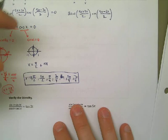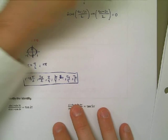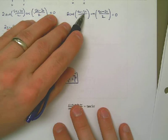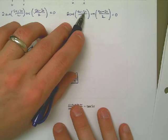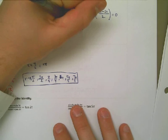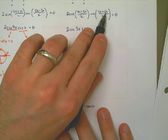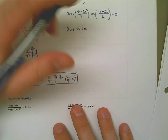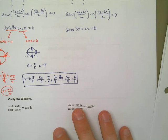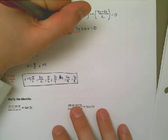That means that 2 cosine of, let's see, that's 4x plus 2x is 6x, 6x over 2 is 3x. This is going to be sine of 4x minus 2x is 2x, 2x over 2 is 1x. So, here's what I have that I need to solve. That means I can go a couple of ways. Either the cosine of 3x is equal to 0 or the sine of x is equal to 0.